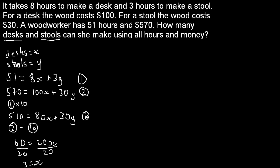We've found how many desks she can make using all hours and money. Now let's find how many stools she can make. Let's substitute x equals 3 into equation 1, since the numbers are a bit smaller and easier to use. So 51 equals 8 times (3) plus 3y. I always like to use brackets when substituting values — it helps keep track of positives and negatives.